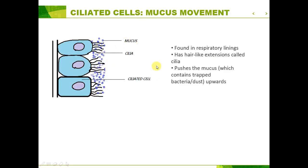First of all, ciliated cells. These cells are found in our respiratory linings and they've got these hair-like extensions called cilia on the tip of their cells. Their purpose is to push up something called mucus towards our throat. Mucus is a viscous, very thick, sticky substance created by goblet cells. Its purpose is to trap things like dust and bacteria that have entered our respiratory system, and the ciliated cells with their cilia push that mucus up towards our throat so that it can be removed from our body.